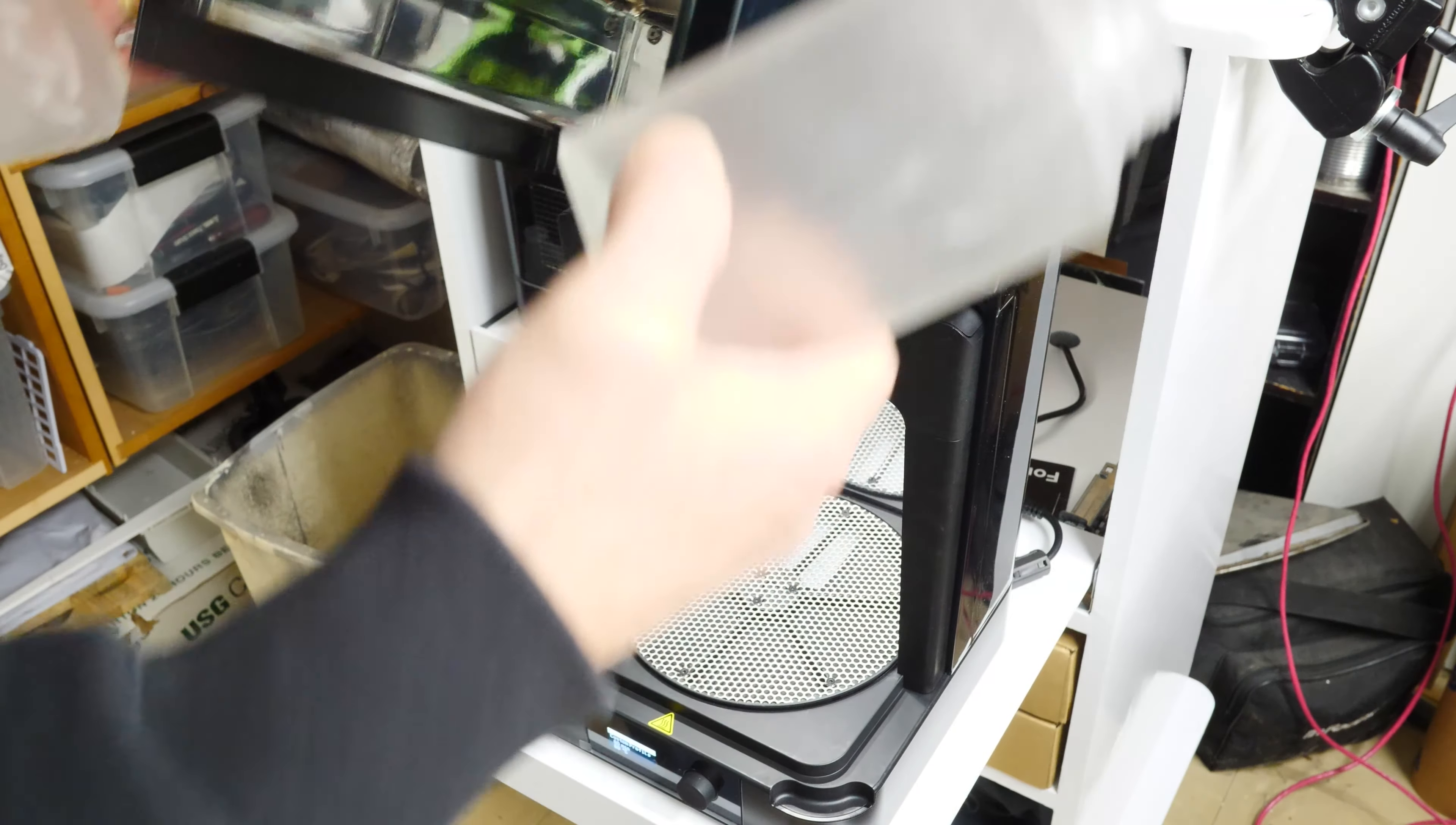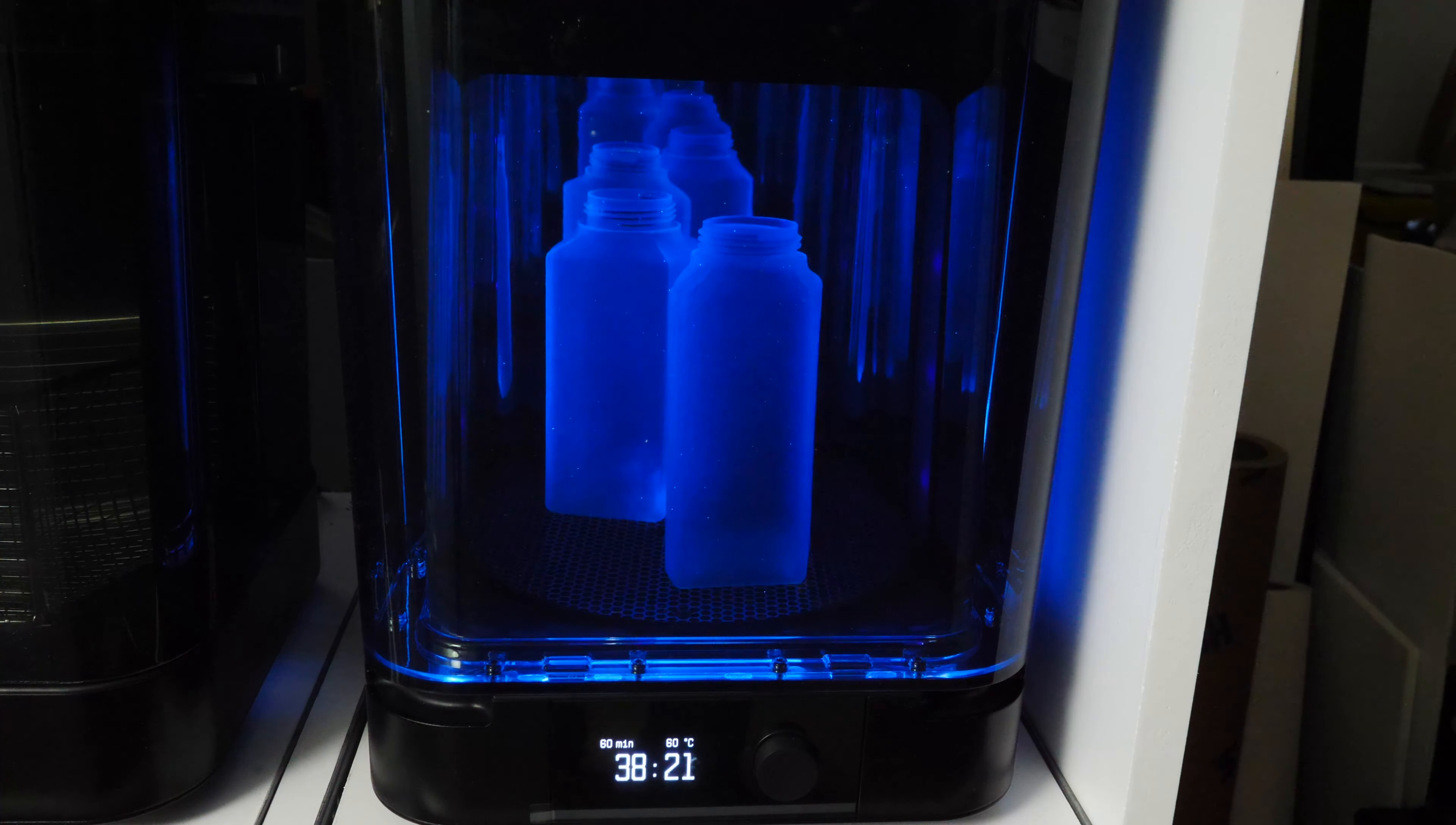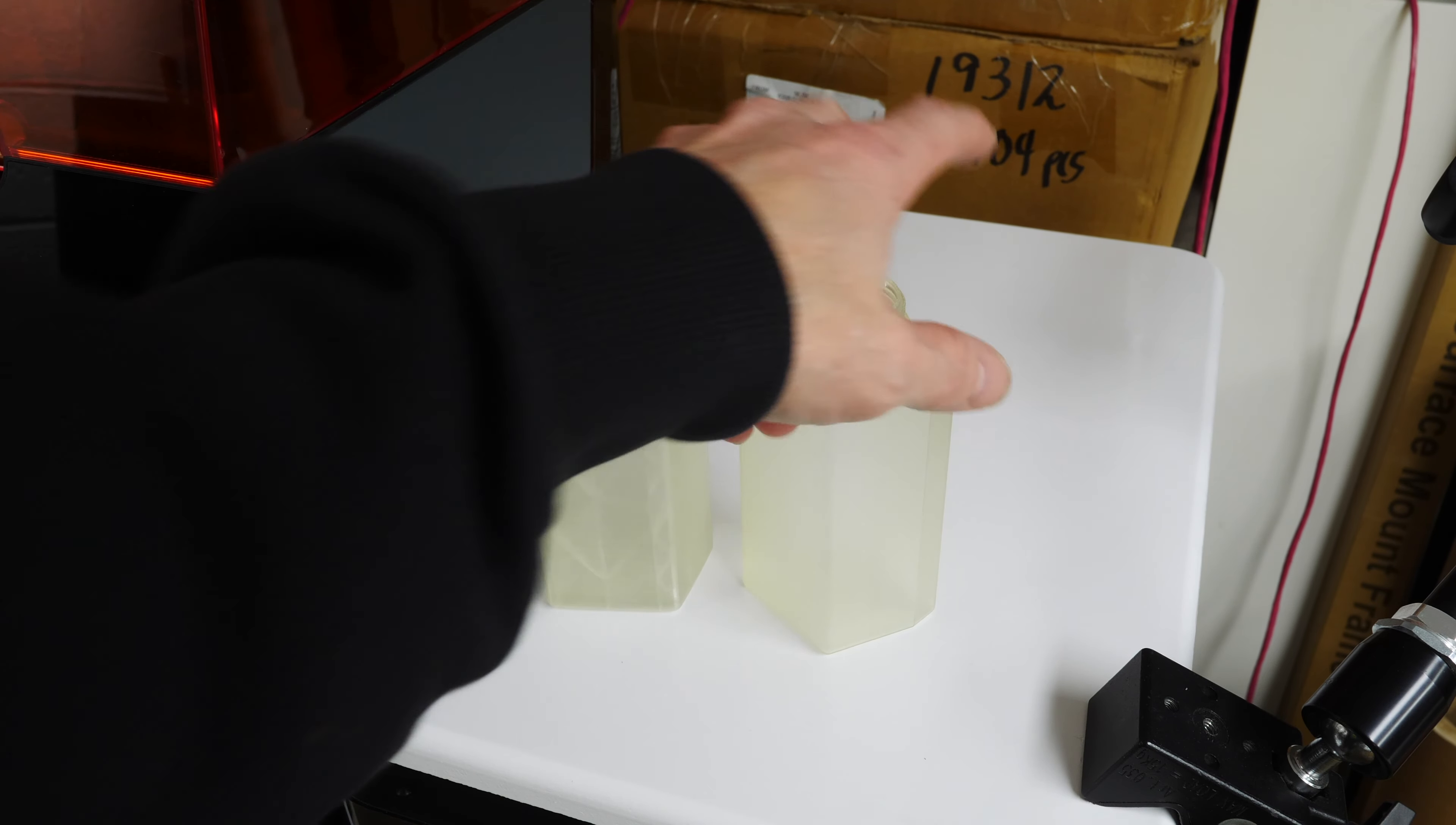Let's put the parts in the Form Cure. This is Formlabs curing station. It has UV lights and heat along with this turntable, so you can set the heat and the length of the exposure to cure the bottles. I put them in for about 30 minutes, and this yellowed them. So they are toast, and I need to print some new ones.